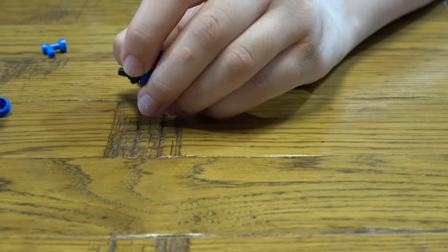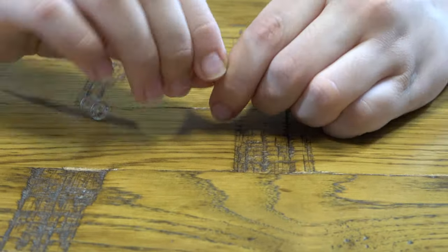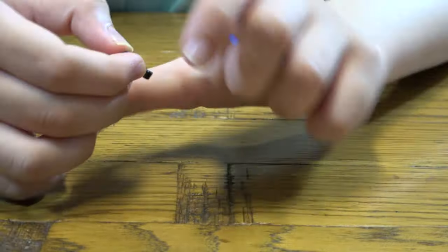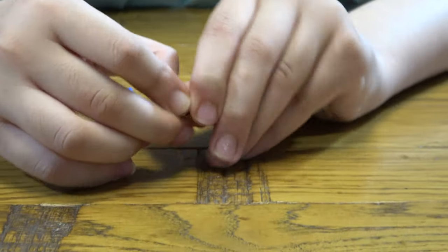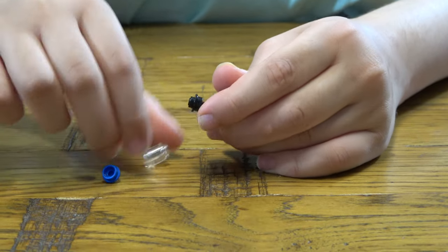Hmm, I made a slight mistake. You need to place this blue piece on top of this black one so it doesn't just go in. Otherwise, without this piece, it'll just go like this.